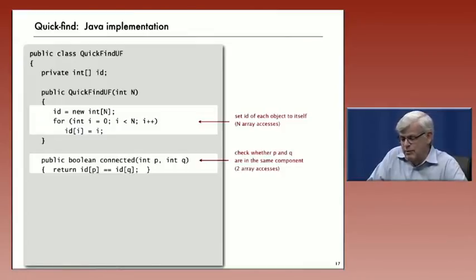The find operation, or connected operation, that's the easy one. This is the quick-find algorithm, so it simply takes its two arguments, P and Q, and checks whether their ID entries are equal and returns that value. If they're equal it returns true; if they're not equal it returns false.